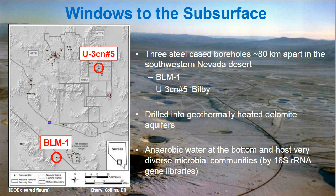I'm going to talk about two different sites — these are sites I worked on as a postdoc at the Desert Research Institute under a program Dr. Dwayne Moser had started. The water samples collected from these areas I used to isolate and enrich novel microbes that I have continued studying here at SIU. The two sites, U3C number five and BLM-1, are spatially very far apart but have similarities — both are geothermally heated, drilled into dolomite, with anaerobic water hosting a very diverse, rich community of subsurface microbes. Both sites are over 500 meters below the surface.